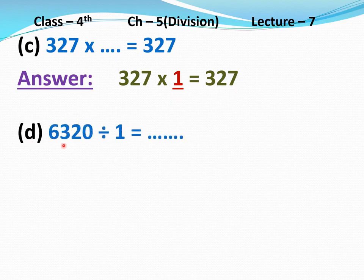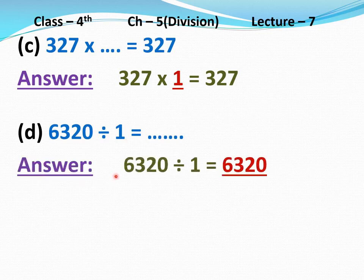Part D: 6320 divided by 1 equal to dash. If we are dividing this number by 1, then you will get the same number as the quotient. Answer: 6320 divided 1 equal to 6320.